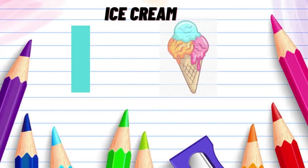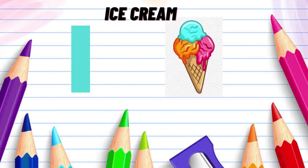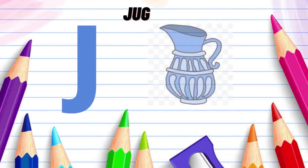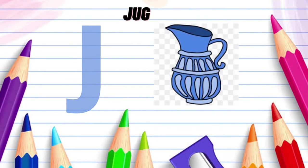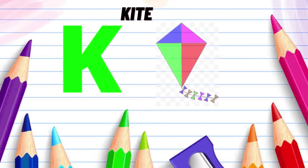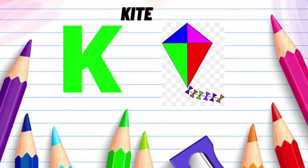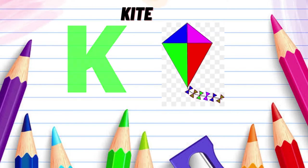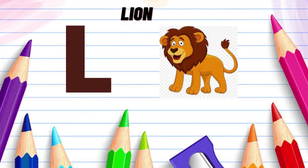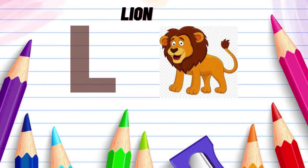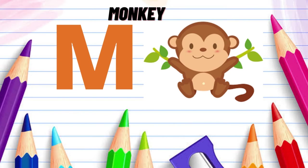I for ice cream, D for jerk, K for kite, L for lion, M for monkey.